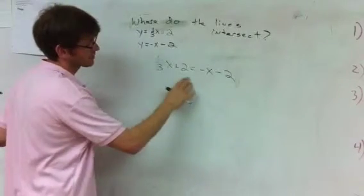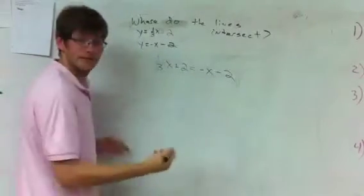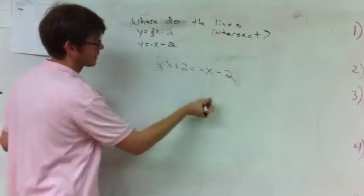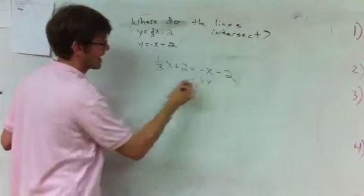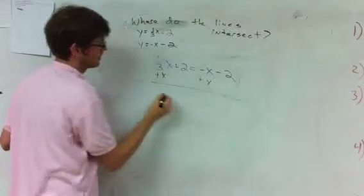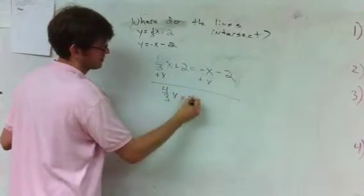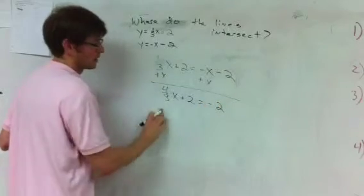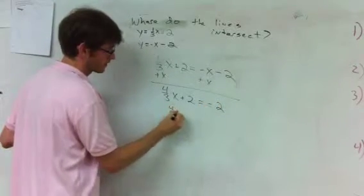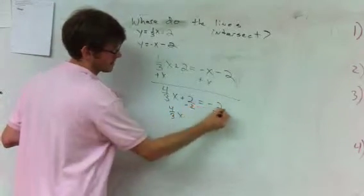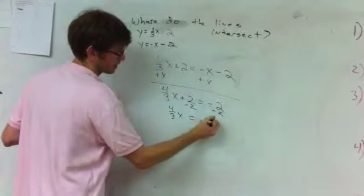We take 1 third x plus 2 equals negative x minus 2, and we solve for the variable. I want to get all the x's to one side, so I'm going to add x to both sides. We have 4 thirds x plus 2 equals negative 2. I want to get the x by itself, so 4 thirds x minus 2 minus 2 equals negative 4.